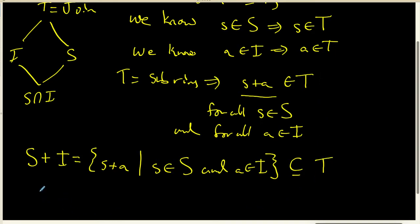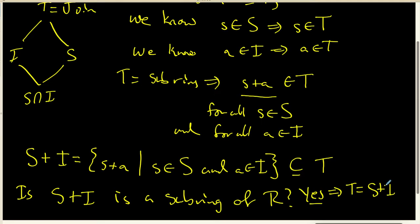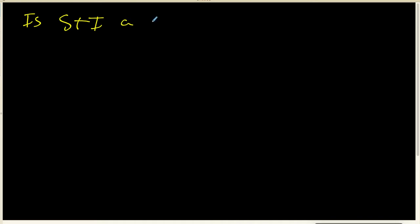I'm going to ask the question: is it possible that S plus I is a sub-ring of our ring R? Because if the answer is yes, then that's going to imply that T and S plus I are the same thing. Remember, any sub-ring that contains S union I has got to include all of T. So this is an important question: is S plus I a sub-ring of R?